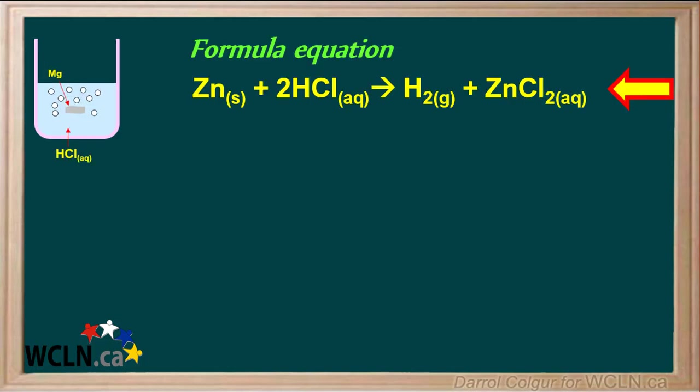The balanced formula equation for this reaction is: Zn(s) + 2HCl(aq) → H₂(g) + ZnCl₂(aq). Notice the two aqueous solutions: 2HCl aqueous and zinc chloride aqueous.